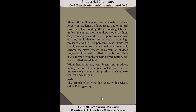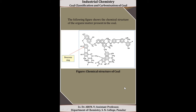When heated in air, coal burns and produces mainly carbon dioxide gas. Coal is processed in the industry to get useful products such as coke, coal tar, and coal gas. The branch of science that deals with the study of rocks is called petrography. The chemical structure of the organic matter present in coal mostly contains fused benzene rings connected together by CH₂ groups.